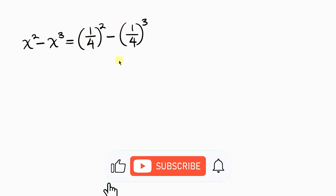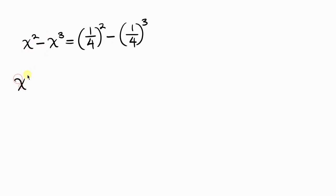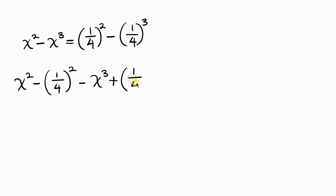Our next step will be to move what we have on the right-hand side to the left-hand side. We have x squared, and (1 over 4) squared crosses to the left and becomes negative (1 over 4) squared. We already have negative x cubed here, and the negative (1 over 4) cubed crosses to the left and becomes positive (1 over 4) cubed.